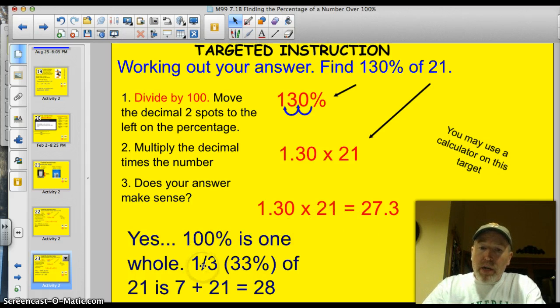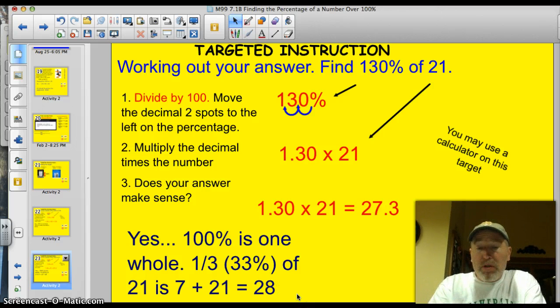You can try it on your own if you've got your calculators. Does this make sense? Well, yeah. 100% is one whole, and one-third is like 33% about. So, a whole would be 21. If we add 7 to it, which would be a third of 21, we'd have 28. So, a quick estimate shows me that, yes, 27.3, that answer makes sense.